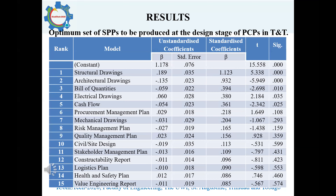From the standard multiple regression analysis, we determined the most critical plans to project schedule success and populated a table giving the 15 most significant subsidiary project plans in order of importance: structural drawings, architectural drawings, bill of quantities, electrical drawings, cash flow, procurement management plan, mechanical drawings, risk management plan, quality management plan, civil and site design, stakeholder management plan, constructability report, logistics plan, health and safety plan, and the value engineering report.